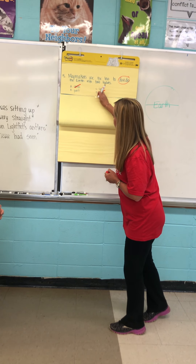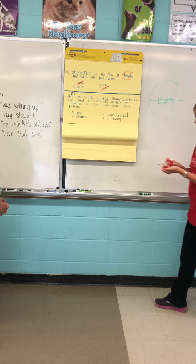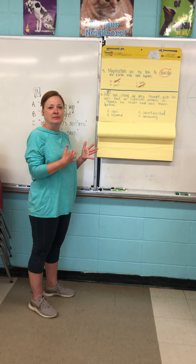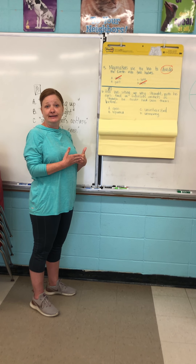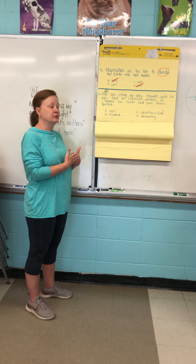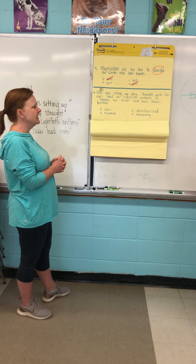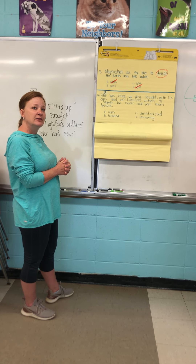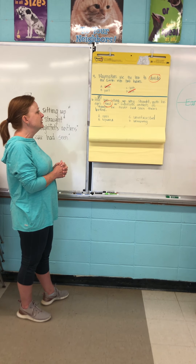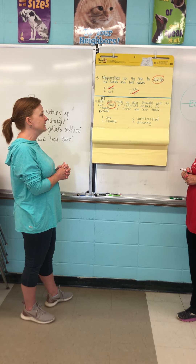Now we're going to skip down to number six. Number six has a part A and a part B. I like to say that when you have a part A and a part B, they go together like peanut butter and jelly. Your B is going to support your A — B is going to explain why you chose what you did for A. The sentence is: Peter was sitting up very straight with his eyes fixed on Lightfoot's antlers as though he had never seen them before. We're going to think about the word fixed and what it means and how it's used.